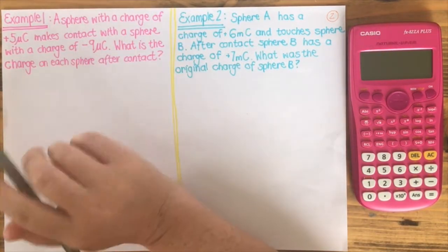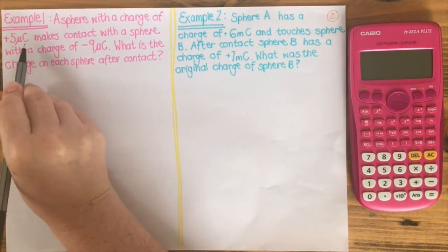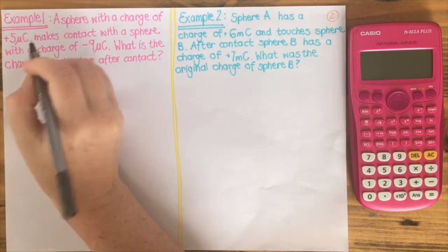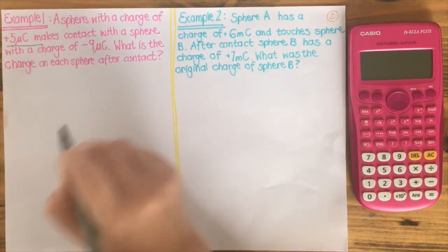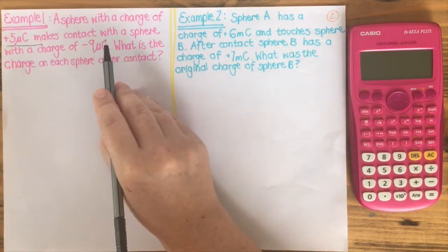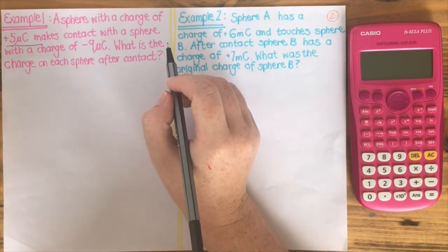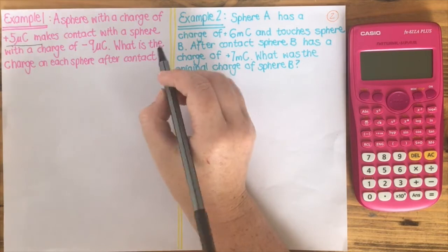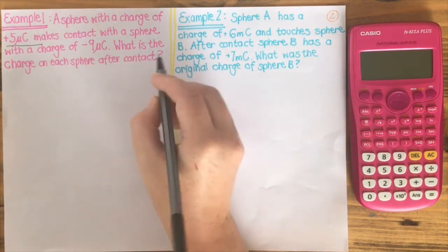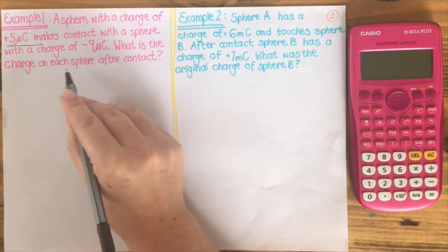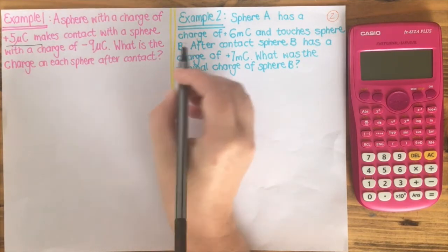A sphere with a charge of positive 5 microcoulombs makes contact with a sphere of charge minus 9 microcoulombs. What is the charge on each sphere after contact?